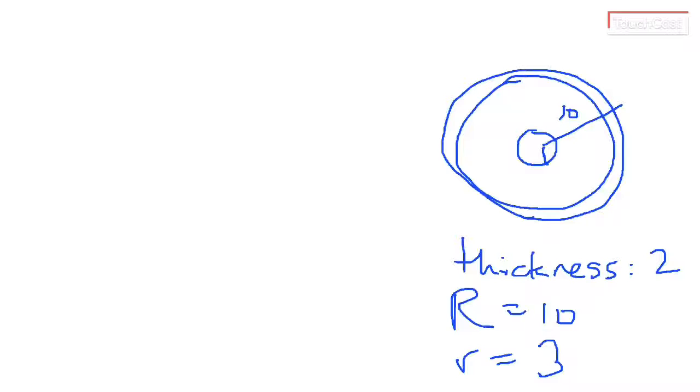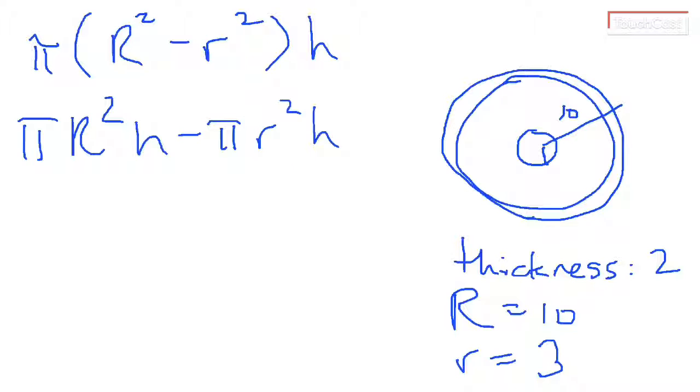So I have a couple of options here. I can compute pi times R squared minus little r squared. I could do pi R squared h minus pi little r squared h. They are all going to get me to the same calculation, which is going to be pi times 10 squared.